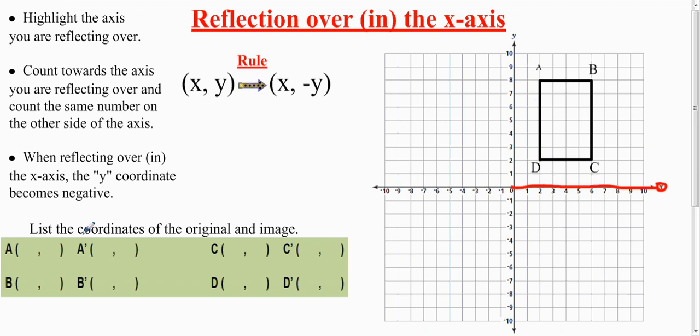A is at 2, 8. B is at 6 over and 8 up. C is at 6 over and 2 up. And D is at 2 over and 2 up.